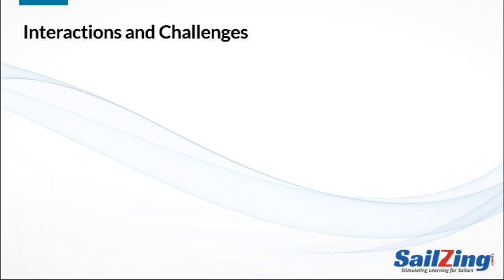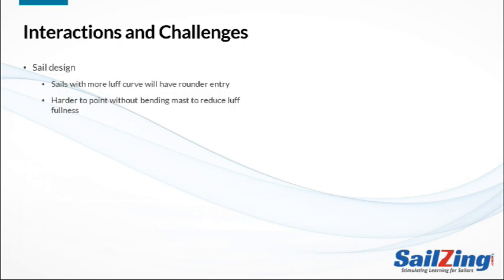Let's preview some of the interactions and challenges associated with draft shape and position. First, realize that sail design has a lot to do with how you use the controls. As an example, one sailmaker told me that his sails are designed with a lot of luff curve. Therefore, with a straight mast the entry shape is round — in order to point well in light air, he bends the mast slightly with vang to make the entry a little flatter.